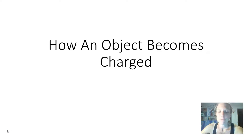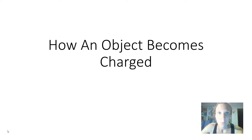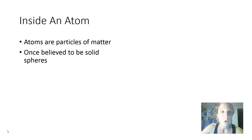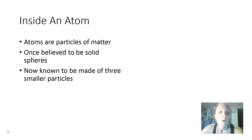This is a very brief video explaining how an object can become electrically charged. But in order to explain that, we need to understand that atoms aren't indivisible. Atoms, remember from year 7, are particles of matter. They were once believed to be solid spheres, but we now know that they are made of three smaller particles.